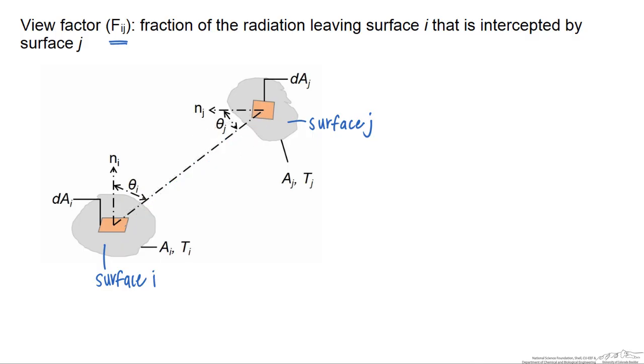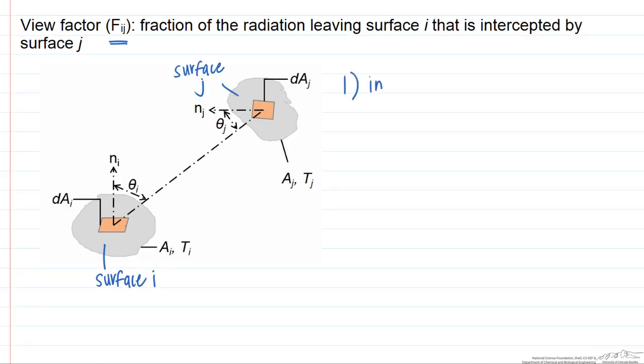Although many of these view factors for different shapes are tabulated, it is still important to understand how to calculate them. There are a few methods by which to do so. The first one is just inspection. What that means is you can look at one surface and tell right away how much radiation is being intercepted. This is often all of it or none of it.